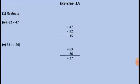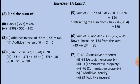Exercise 1a: evaluate minus 32 plus 47. You take 47 first and then subtract 32, giving positive 15. Similarly, 53 plus (minus 26) equals 53 minus 26, which is 27. Next, find the sum of 1005 plus (minus 277). Questions 2, 3, and 4 are easy and have been answered. Question number 5: 0 minus 318 should be minus 318 — the minus sign is missing in the text, so please correct it, students.